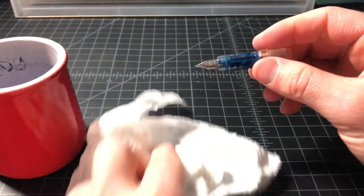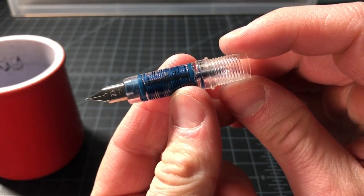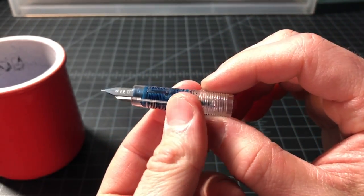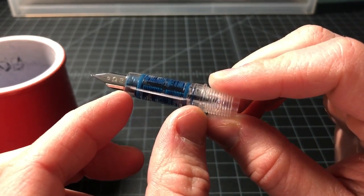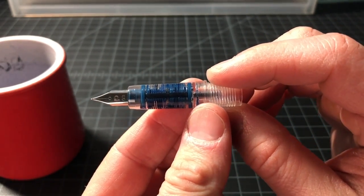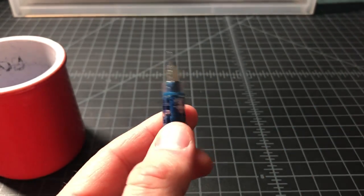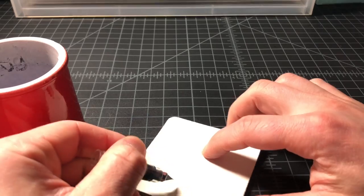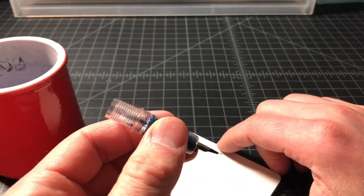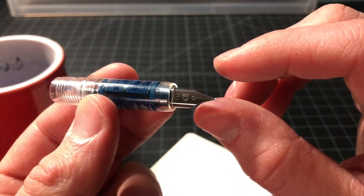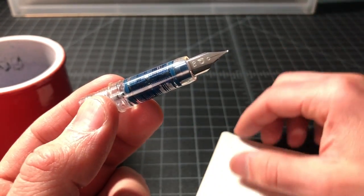Right now, this is a fully functional, cleaned out, ready to go nib. What I will say is that a little bit of water in here as you start to write is completely fine. Your first maybe five or ten minutes of writing, your ink will be a little bit lighter. But as long as you're not writing very important documents right then and there, it's completely fine. Start your art project or your manuscript a minute later and you'll be fine.